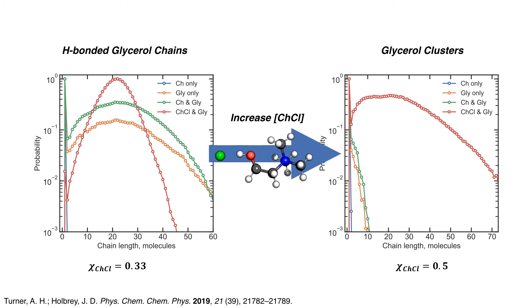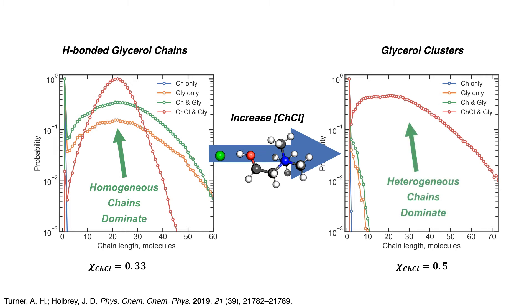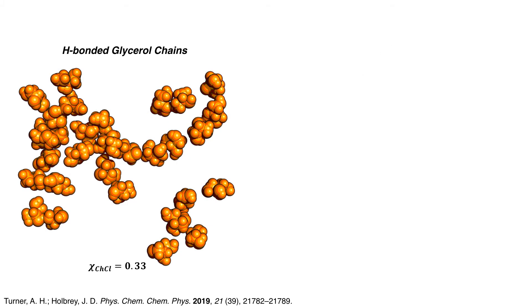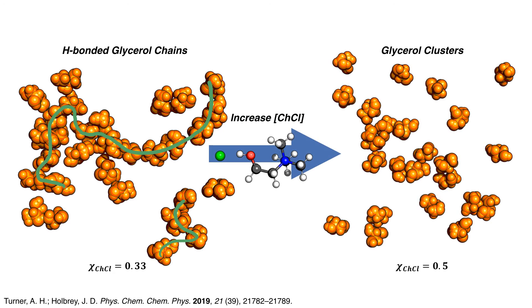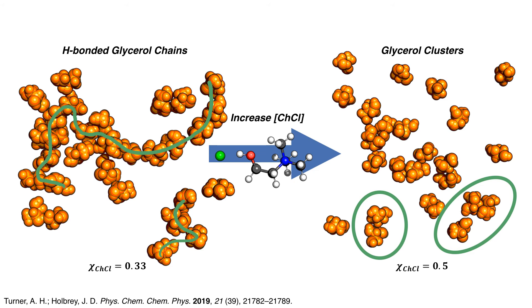As the choline chloride salt concentration is increased, the bulk glycerol-glycerol hydrogen bond network undergoes substantial disruption and reorganization of the liquid to accommodate the excess choline chloride. This leads to a change in the liquid structure from one dominated by the glycerol network with choline cations dispersed in a continuous glycerol phase, to one with isolated small glycerol clusters distributed as a molecular dilutant in a predominantly choline chloride ionic liquid environment.